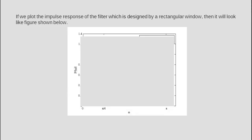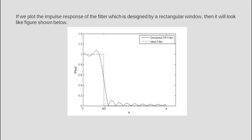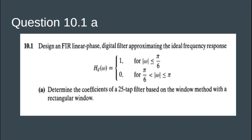If we plot the impulse response of the filter designed by a rectangular window, we can observe ripples in both the passband and stopband. Now let's try to solve a problem taken from the digital signal processing book by John G. Proakis.